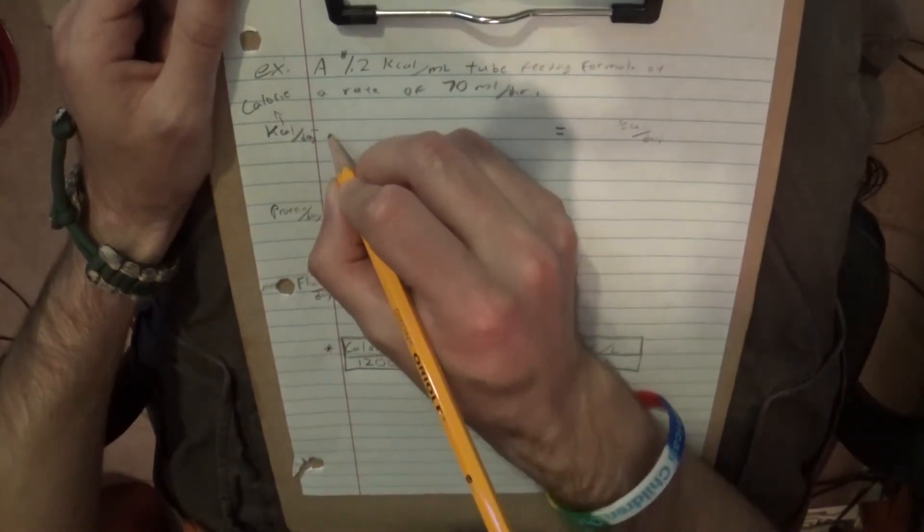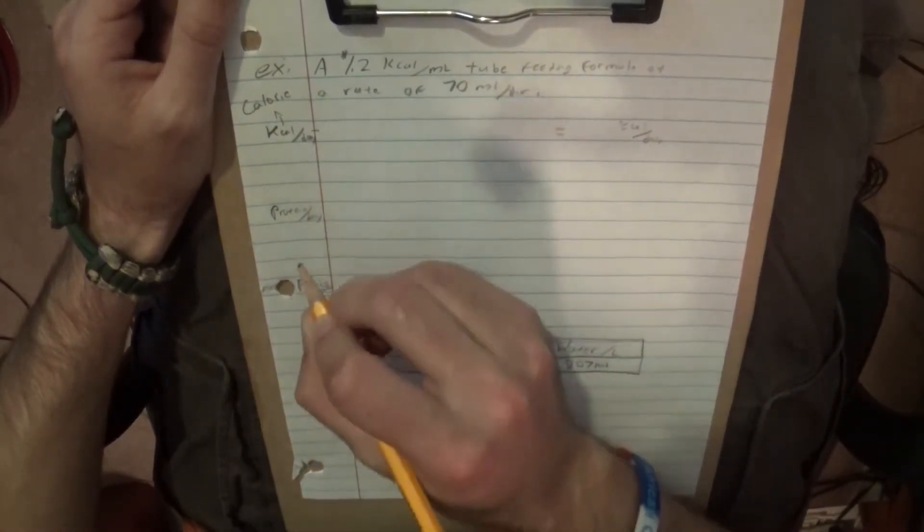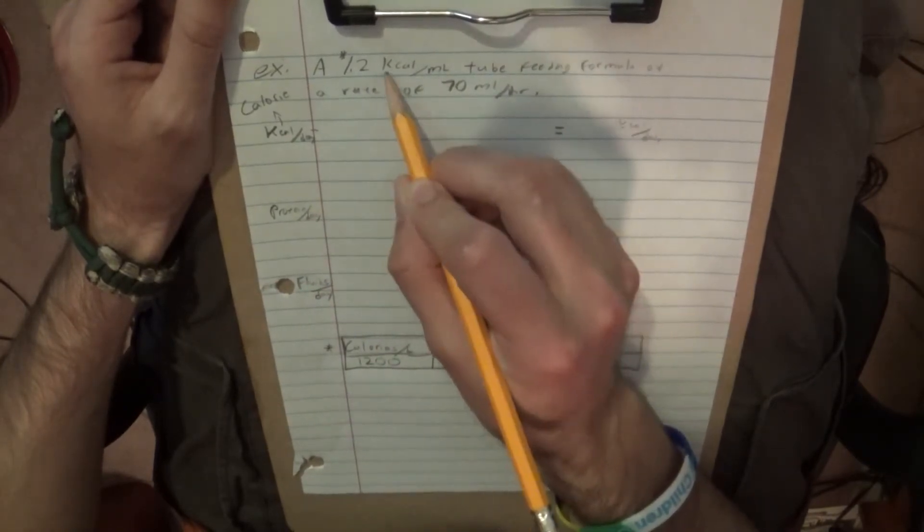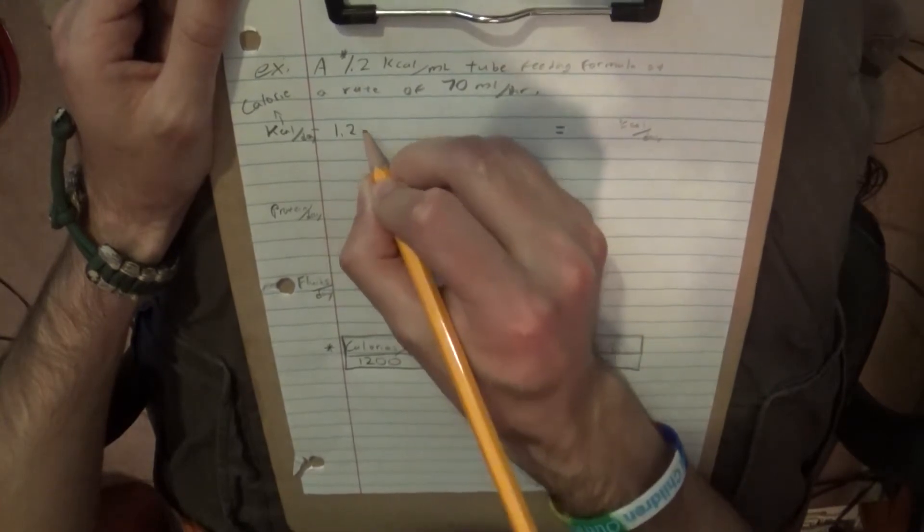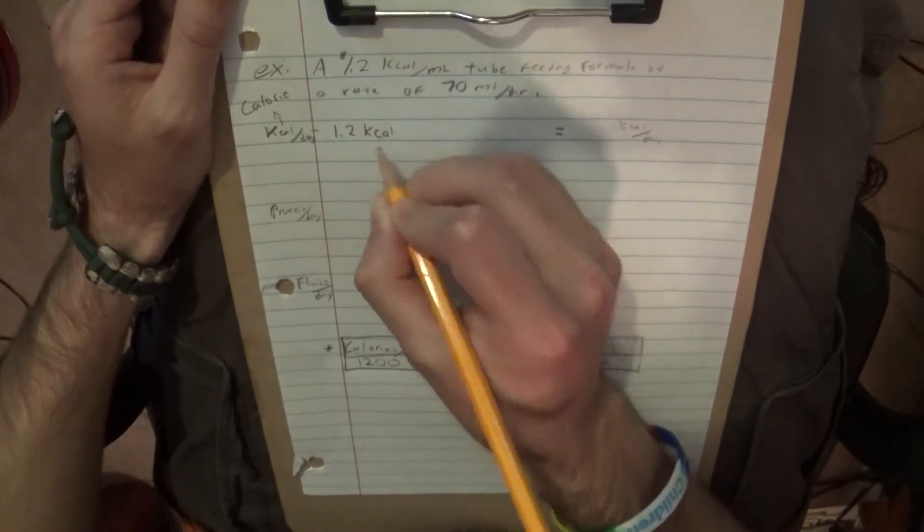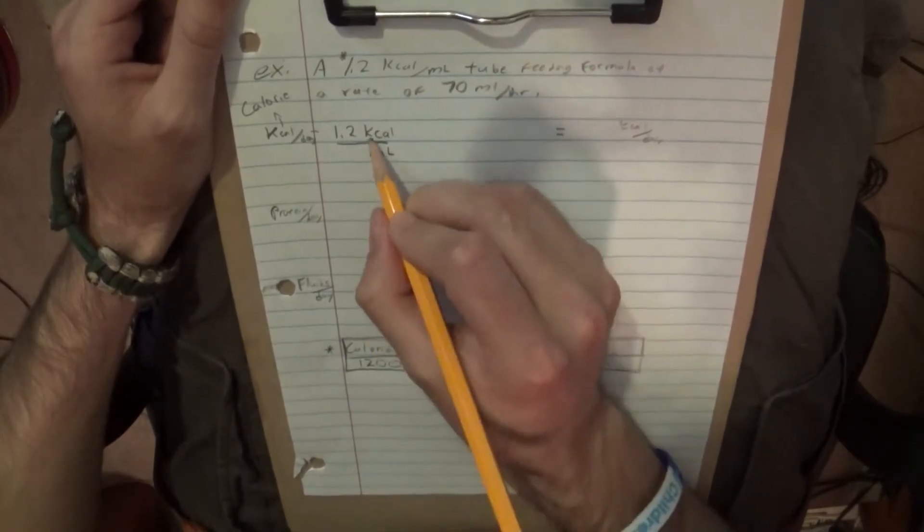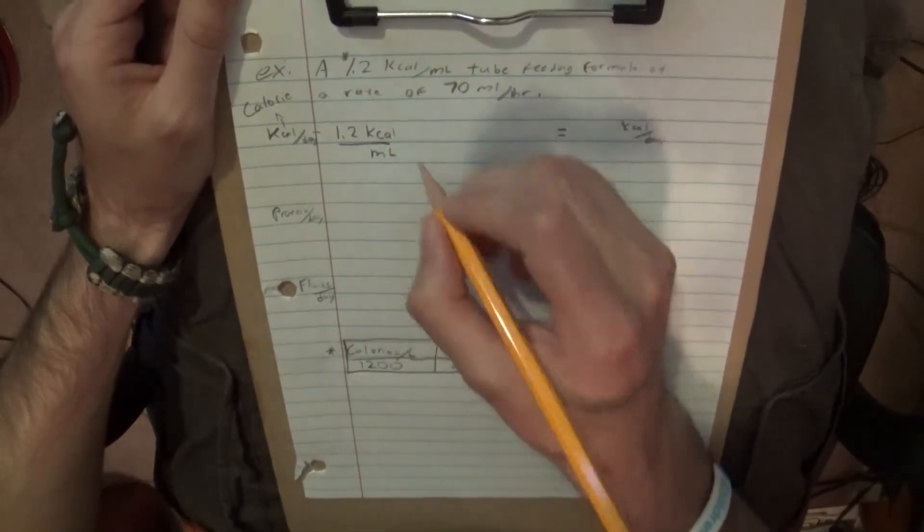But, here's the trick. In order to find kilocalories per day, what do we have? We have 1.2 kilocalories per milliliter, so we want to find kilocalories. So we start there. We do 1.2 kilocalories, draw a line over it, per milliliter. Now, that's going to be important in a moment.